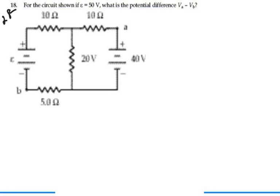Here's problem 2818. For the circuit shown, if the EMF of the battery is 50 volts, what is the potential difference VA minus VB? A is over here, and B is over here. We're given that the potential of this battery is 50 volts.